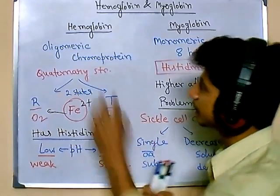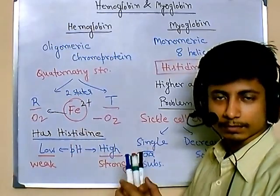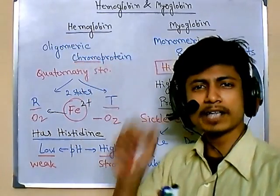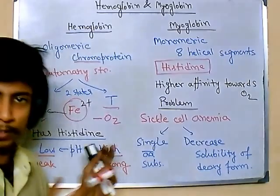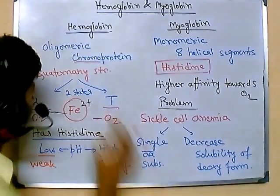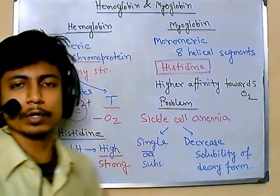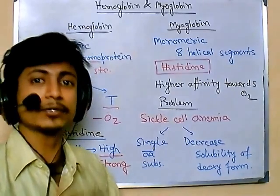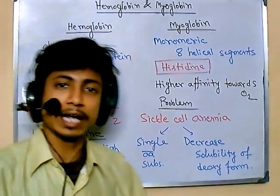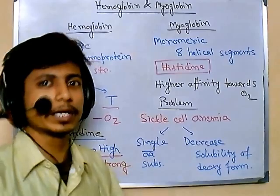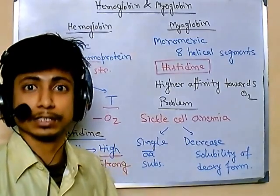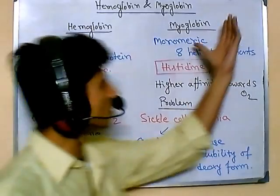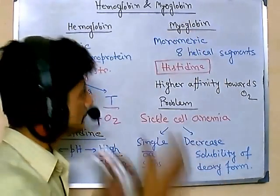Hemoglobin is oligomeric — more than one subunit — and it is a chromoprotein. 'Chromo' means color, so it imparts color, which is why the presence of hemoglobin turns blood red. Another very important feature of hemoglobin is cooperative binding: when one oxygen binds, it increases the affinity of hemoglobin for the next oxygen. It's a work-together process — a very interesting binding mechanism.